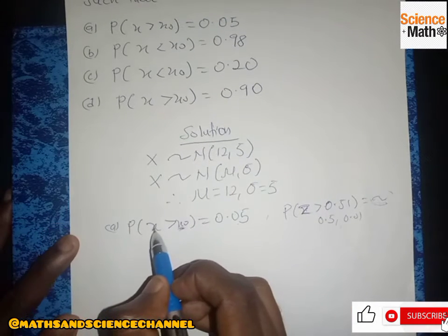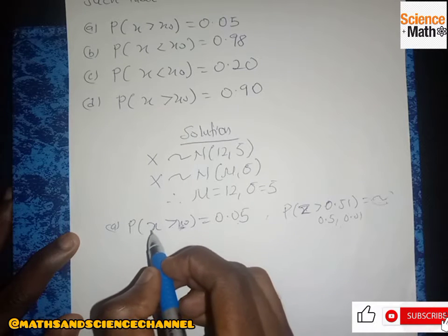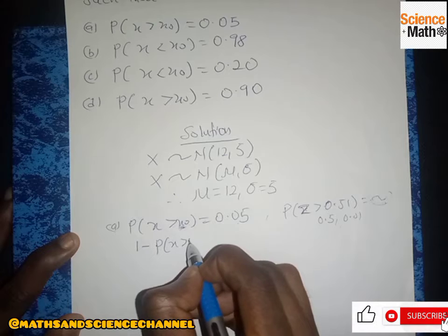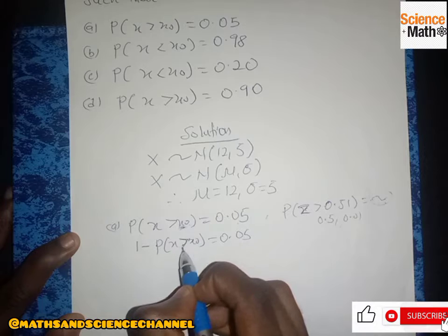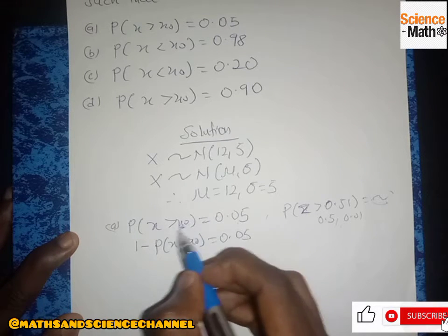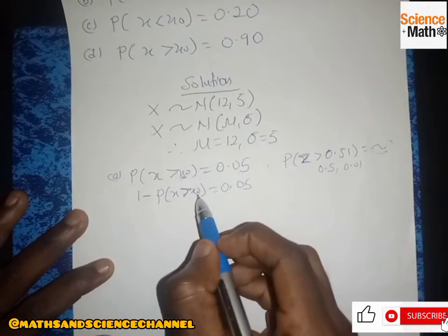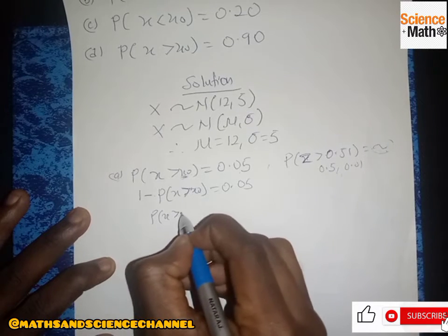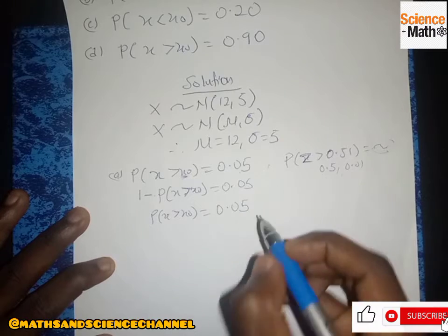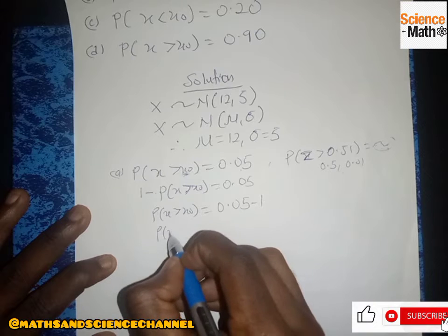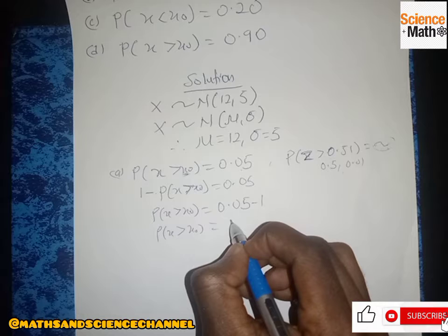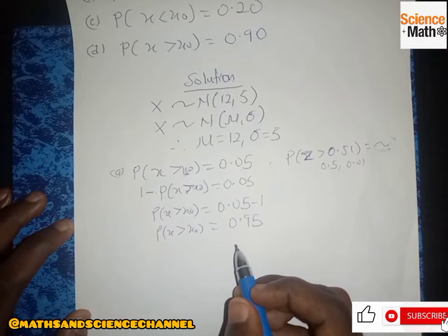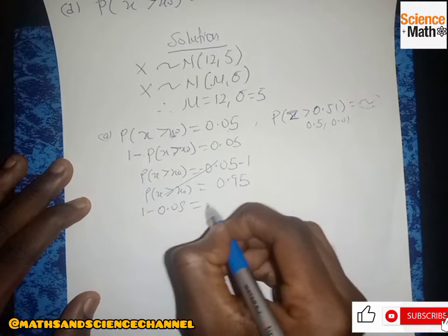Since we have P(S > s-naught) = 0.05, and it is a 'greater than' condition, it becomes 1 minus the probability. So 1 minus 0.05 gives us 0.95. Therefore P(S > s-naught) = 0.95, meaning the cumulative probability we now look up in the z-table is 0.95.